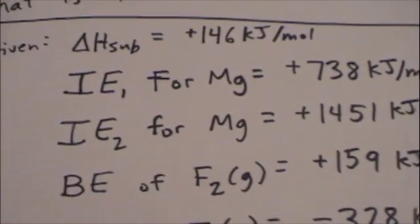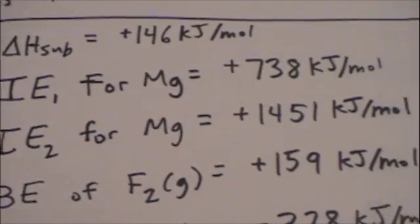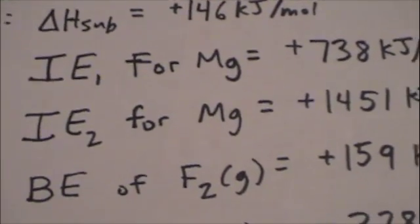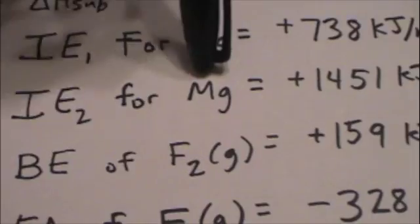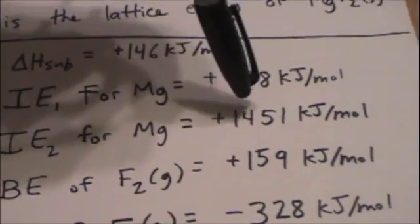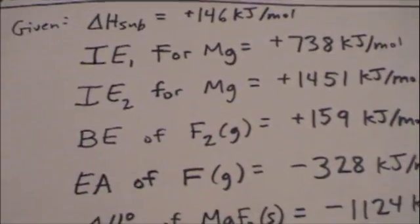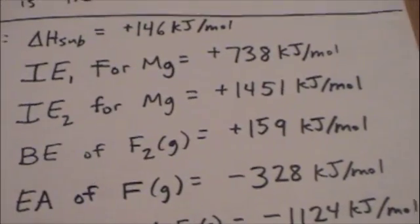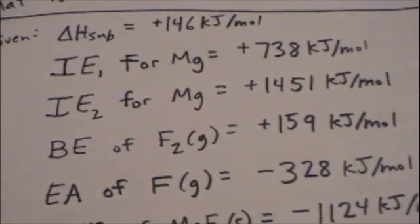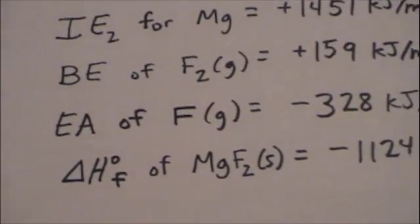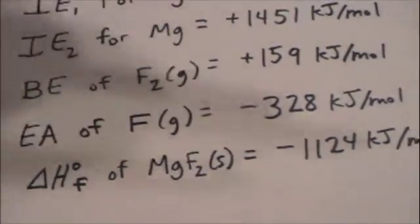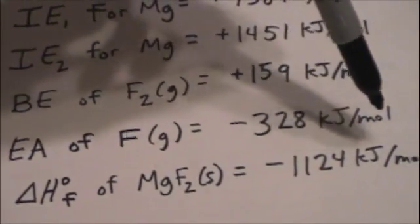The second ionization energy — the energy required to remove the second electron once you've already formed the cation, forming Mg²⁺ — because when you remove an electron the atom becomes positively charged, forming the cation — is positive 1451 kJ per mole. The bond dissociation energy for F₂ is 159 kJ per mole, the energy required to break that F₂ molecular bond to form fluorine atoms. And the electron affinity of fluorine atoms in the gaseous state is negative 328 kJ per mole.